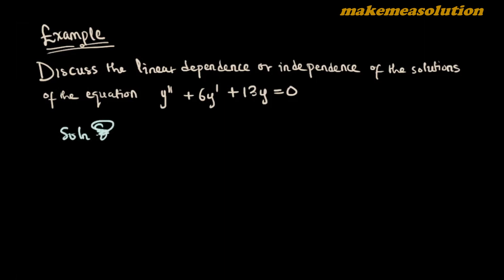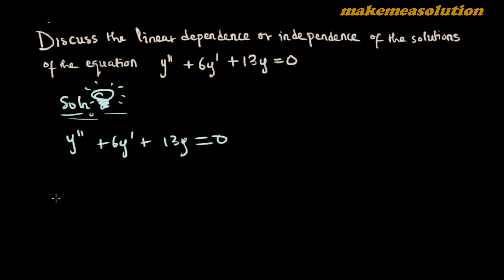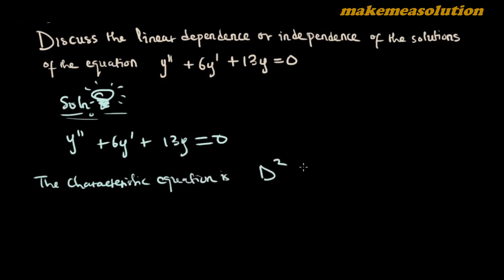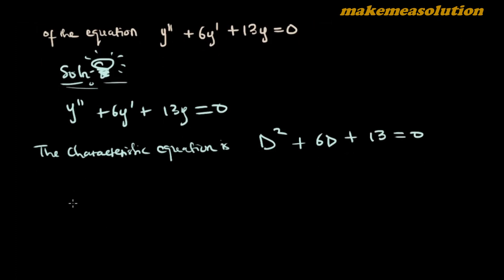We begin by finding the solutions of this differential equation. To find the solutions, I have y'' + 6y' + 13y = 0. The characteristic equation is d² + 6d + 13 = 0. Okay, so this is my characteristic equation.